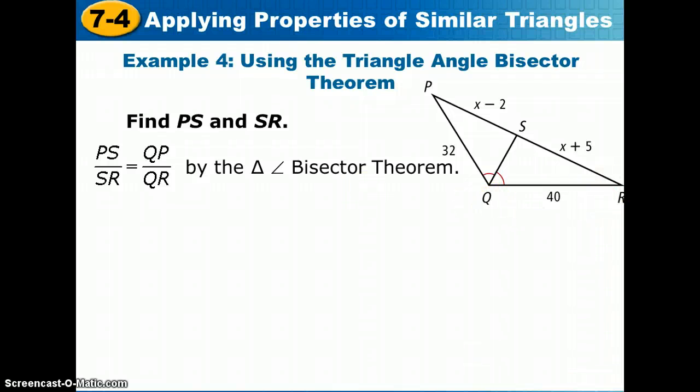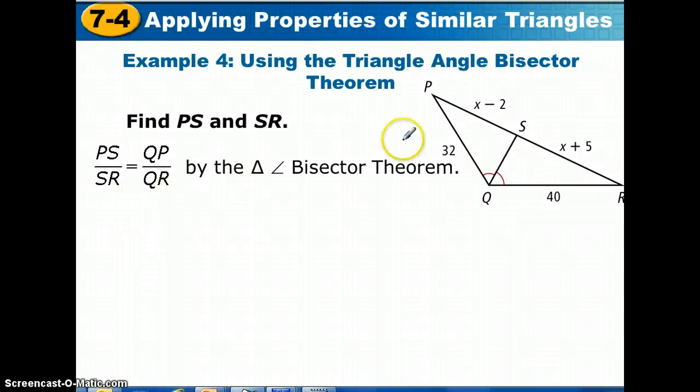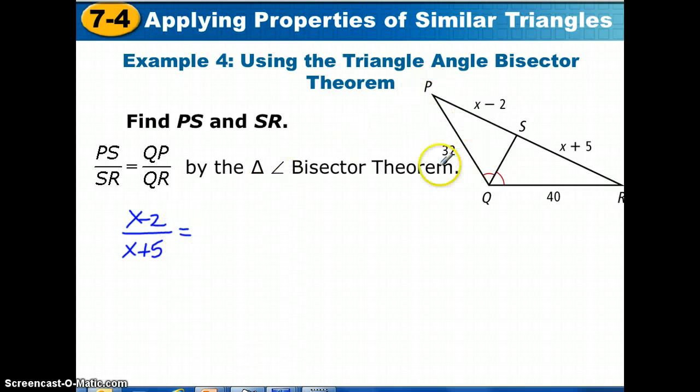And that will give us the following proportion when we fill in what we know. PS we can replace with x-2. SR we replace with x plus 5. That would have to equal PQ, or QP, which is 32, over QR, which is 40.